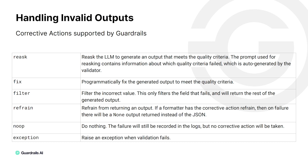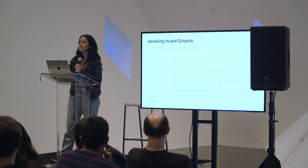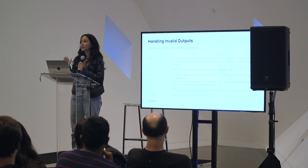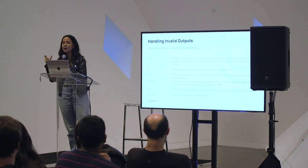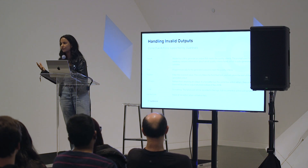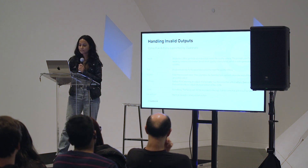Guardrails supports a bunch of configurable options for handling validation failures. If any guardrail fails, you can re-ask — all the re-asking orchestration and prompt construction is automatically handled for you. You can also programmatically fix it if possible. You can filter offending values — for example, filtering text that contains profanity. You can refrain from answering if the response is too bad. You can choose no-op, where no action is taken but logs about why validation failed are automatically stored for you. And finally, you can raise an exception.